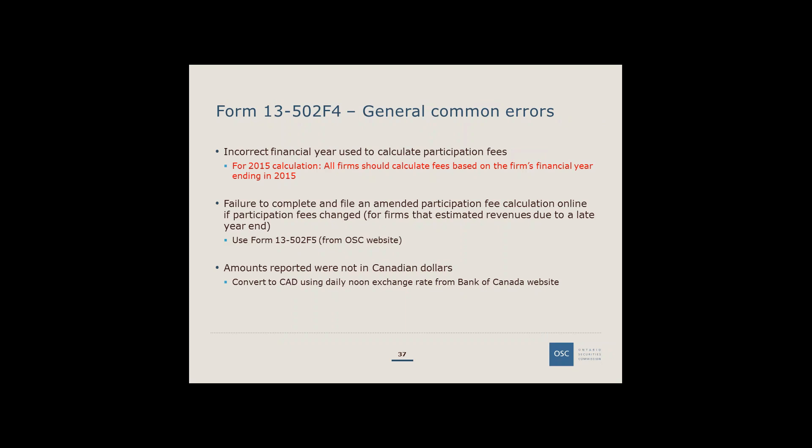In terms of common errors before going into line-by-line detail: one common error is firms using an incorrect financial year to calculate participation fees. Since all firms are now required to use the 2015 financial year, the year has been hard-coded as 2015 in the online form, so the participation fee calculation will be based on revenues from the financial year ending in 2015.